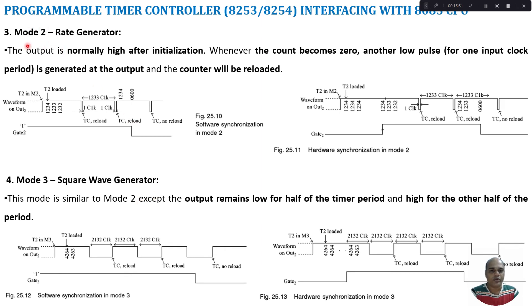Mode 2 is called the rate generator. The output is normally high after initialization. When gate signal is 1, down counting starts. When the count reaches 0, a low pulse is generated for one clock cycle on the out signal and the value is reloaded — for example 1234 is reloaded and down counting begins again. When the gate signal is low, once terminal count is reached, an output pulse is generated but there is no reload operation. Reload takes place only when the gate signal is 1.